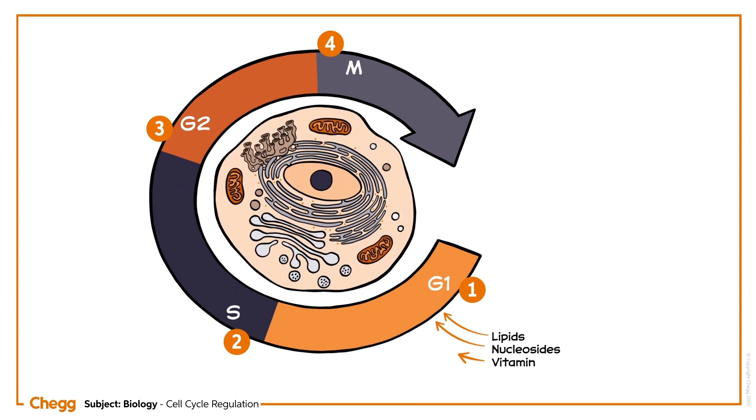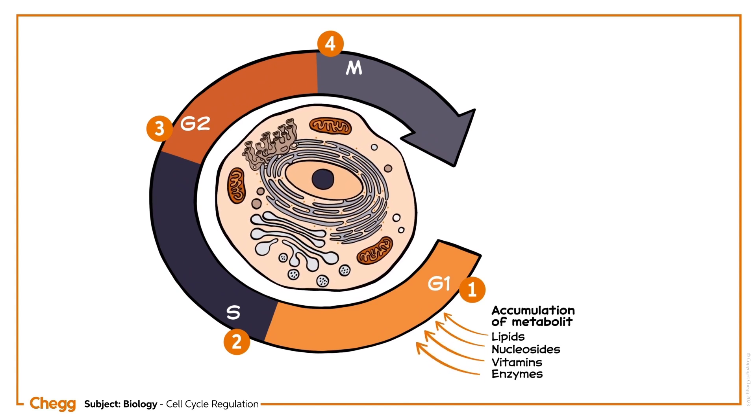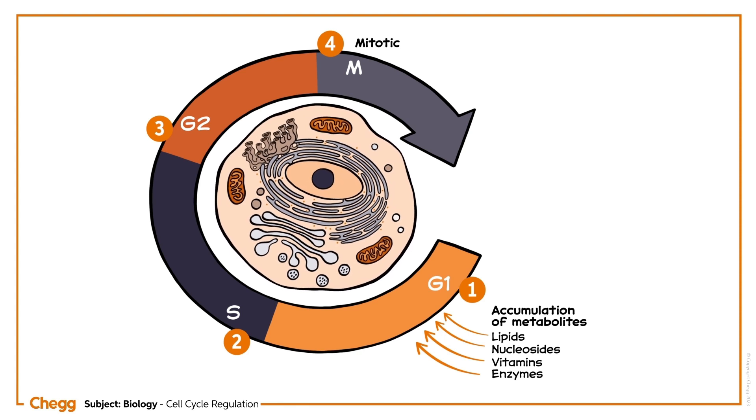The G1 phase will start the accumulation of metabolites that are used in the M or mitotic phase of the cell cycle.